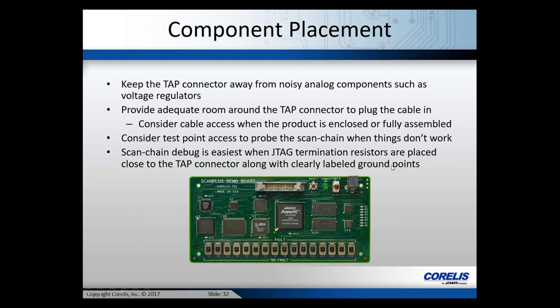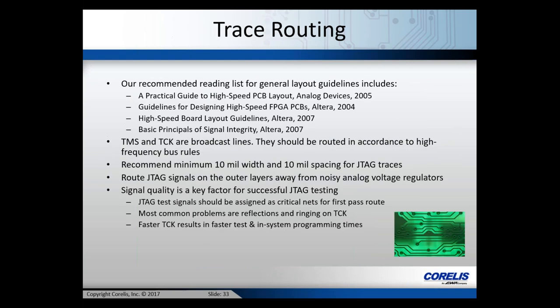Scan chain debug is easiest when JTAG termination resistors are placed close to the TAP connector and clearly labeled with silkscreen. Provide labeled ground test points for test engineers — many designs don't provide good ground connections, forcing test engineers to use a capacitor lead as a ground reference during debug. A dedicated ground test point near the TAP connector is very convenient.